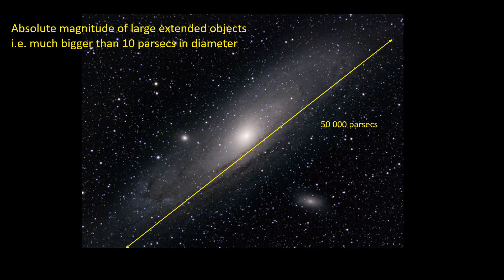As we've said before, the absolute magnitude is the magnitude an object would have at a distance of 10 parsecs. For large extended objects such as the Andromeda galaxy which is 50,000 parsecs in diameter, being at a distance of 10 parsecs does not really make any sense. So the absolute magnitude is calculated assuming all the light is concentrated at one point.